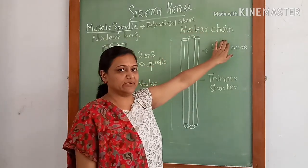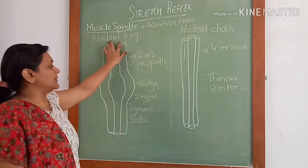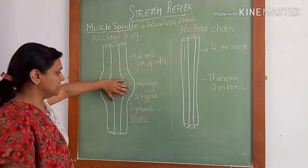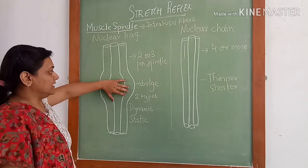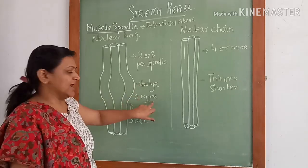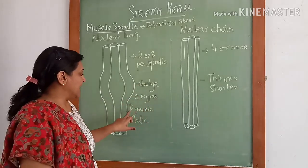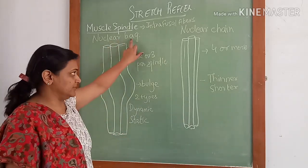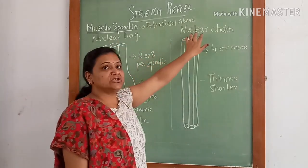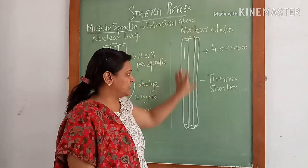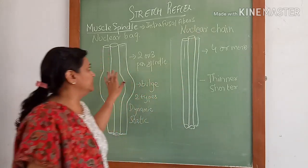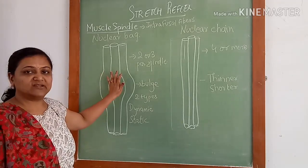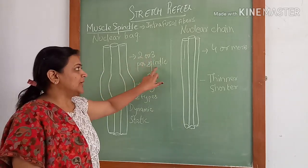The intrafusal fibers are of two types: nuclear bag fibers and nuclear chain fibers. The nuclear bag fibers are named as such because they have a bulge in the center, and they are of two types: dynamic nuclear bag fibers and static nuclear bag fibers. Nuclear chain fibers are straight and shorter than nuclear bag fibers.